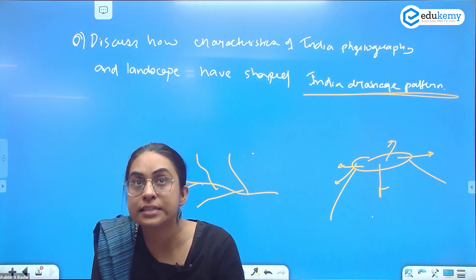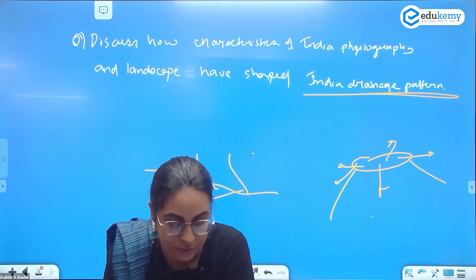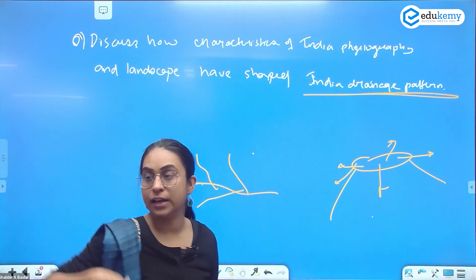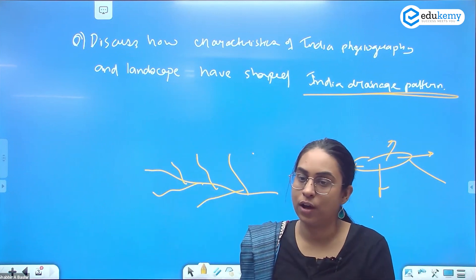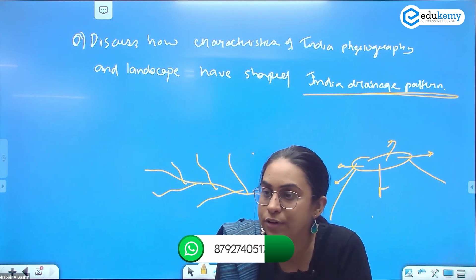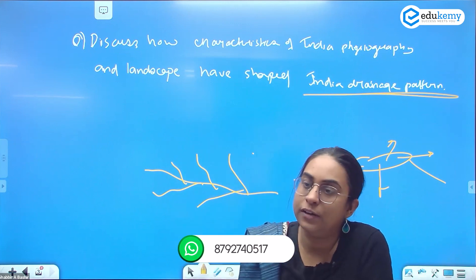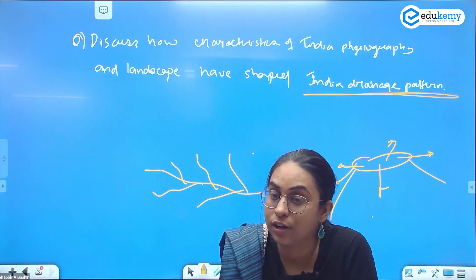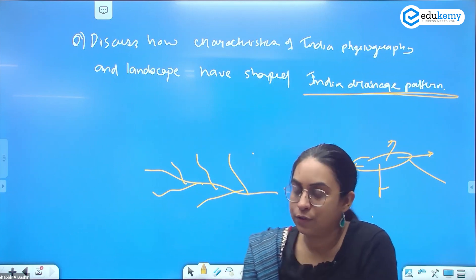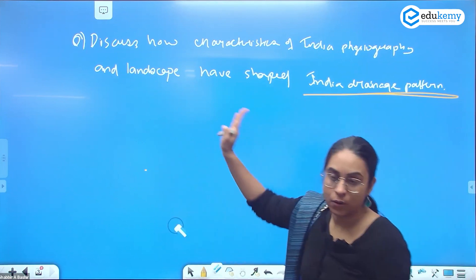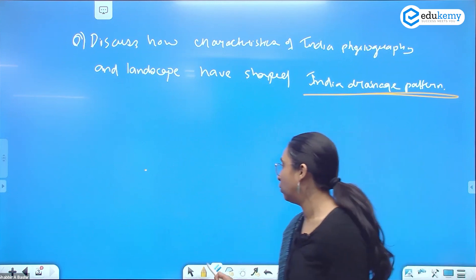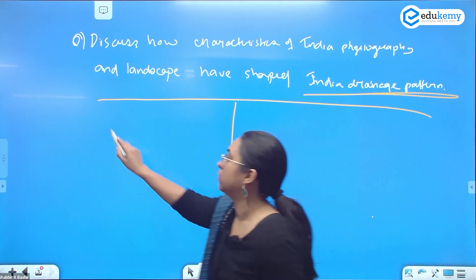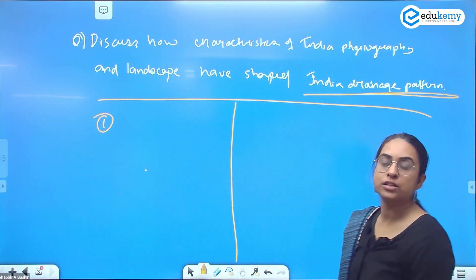What are the characteristics of Indian physiography and landscape that have decided the drainage pattern? With soft rocks and uniform lithology you get dendritic pattern. Centripetal drainage — where you have playa lakes — is found in Rajasthan. When I say Indian physiography, you also talk about superimposed drainage and rectangular drainage. So how have the characteristics shaped the physiography? Write some points about characteristics on one side and drainage pattern on the other.